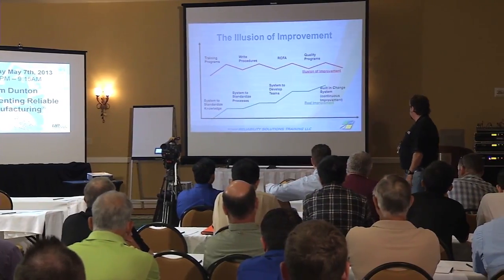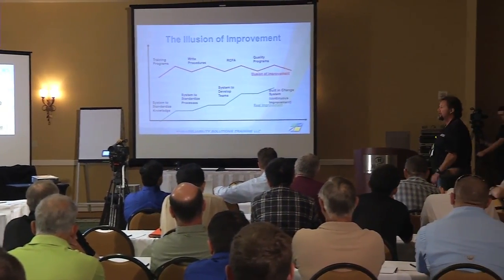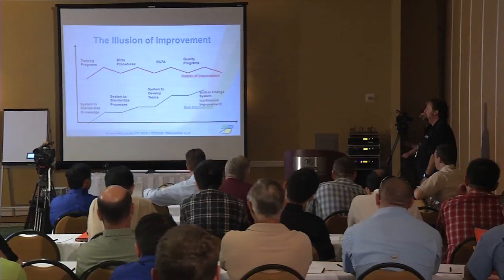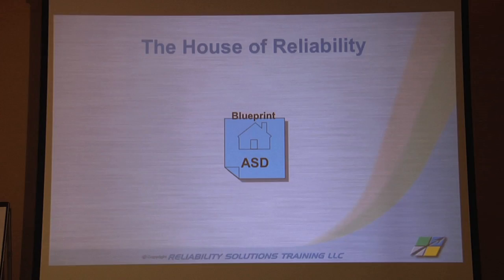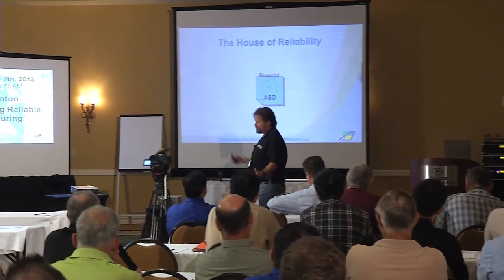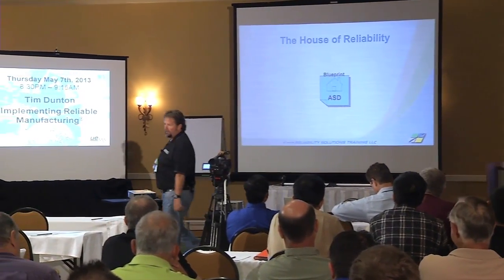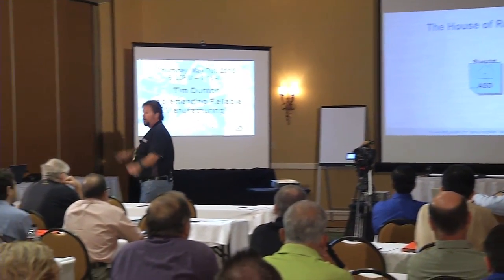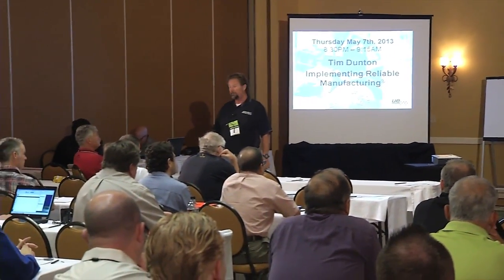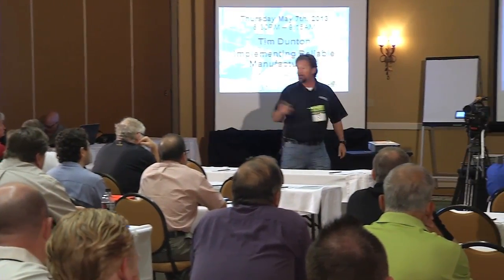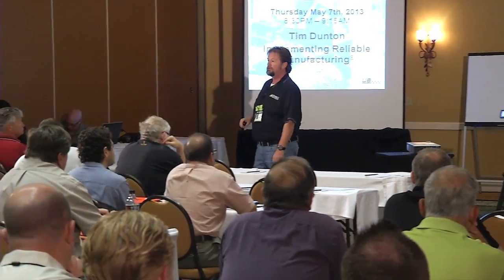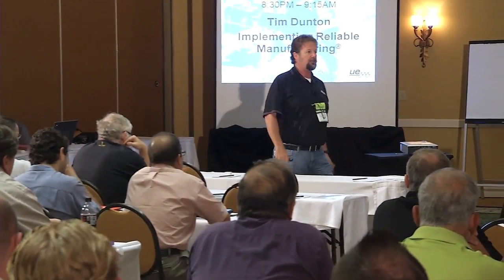You've got to be able to develop the teams and of course continuous improvement — that was discussed on Tuesday. We look at this as a little bit like building a house. If you're going to build a house of reliability, what's the first thing you need? You've got to have a blueprint. Before you get the foundation, I need a blueprint — I need to know what this thing looks like. In our world the blueprint is something we call ASD: Asset Strategy Development.